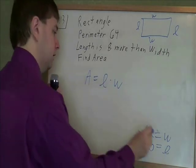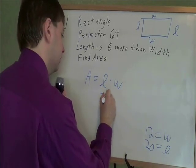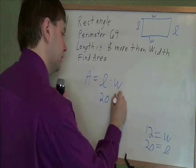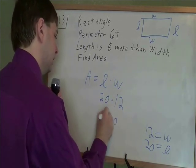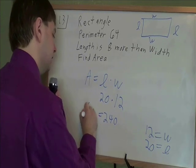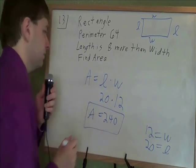And the area of a rectangle is length times width. And we know the length. Length is 20. We know the width. Width is 12. 20 times 12 is 240. And that is the area. And our final answer for that problem.